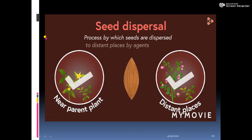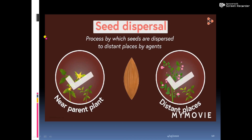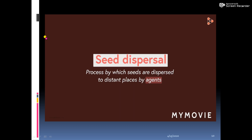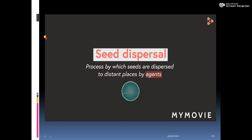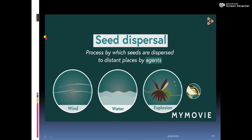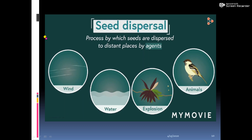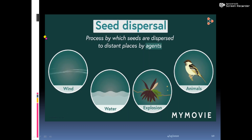The process by which seeds are dispersed to distant places by various agents is known as dispersal of seeds. Seeds are transferred to various places by factors such as wind, water, explosion, and animals. These agents make the process of dispersal of seeds easier. Let's discuss this process in detail.